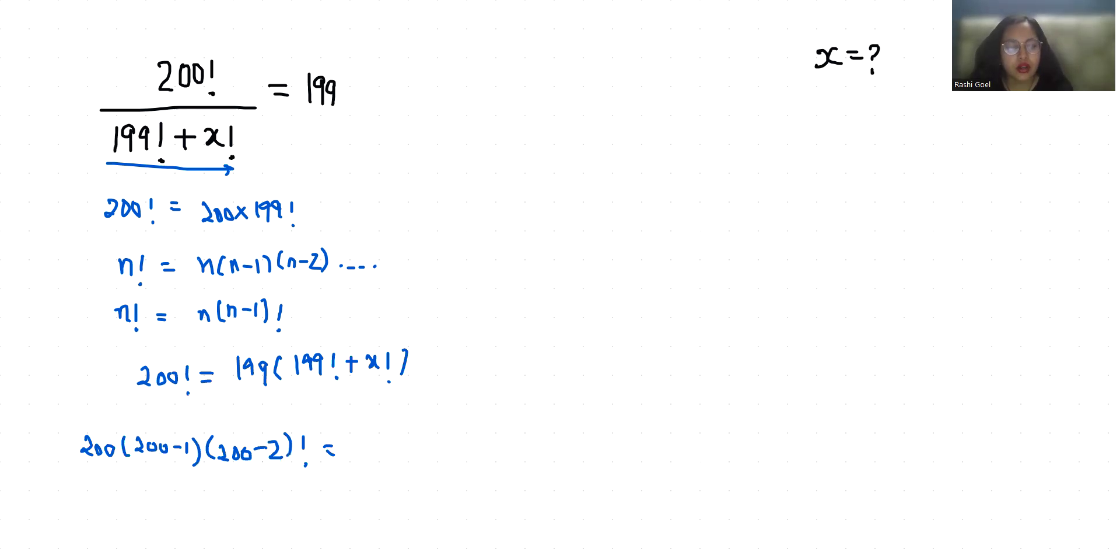This equals 199 times 199 factorial plus x factorial, so we can cancel out the 199 factorial.